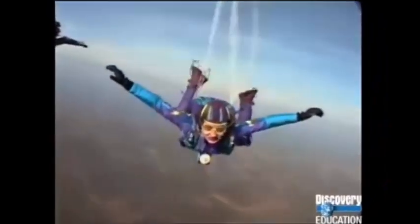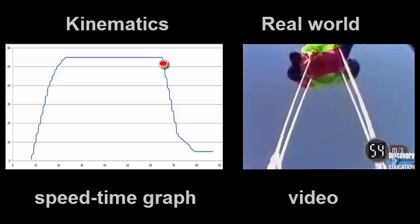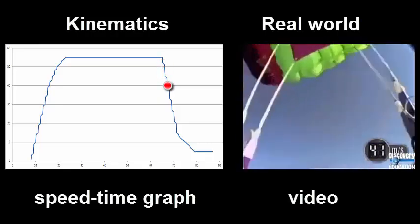To slow down, the upward force needs to be greater than the downward force. When the parachute opens, air resistance suddenly becomes much greater than gravity. The forces are no longer balanced and this changes her speed. She slows down.